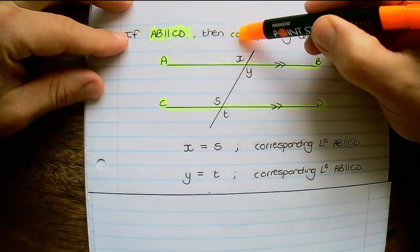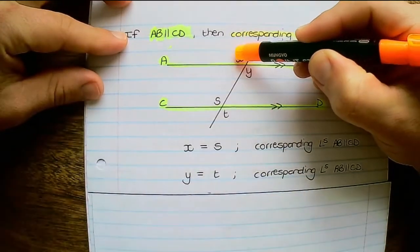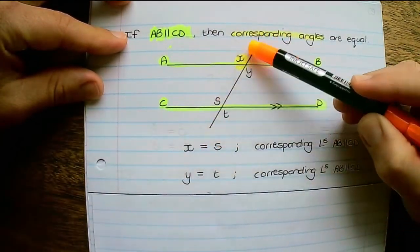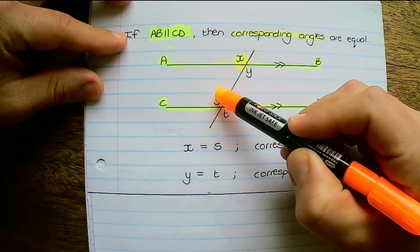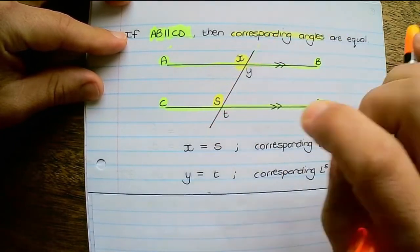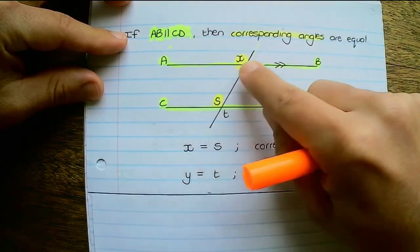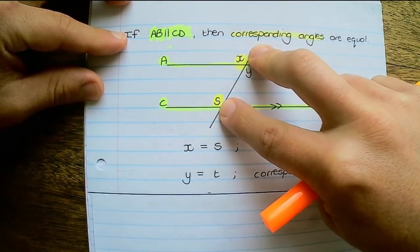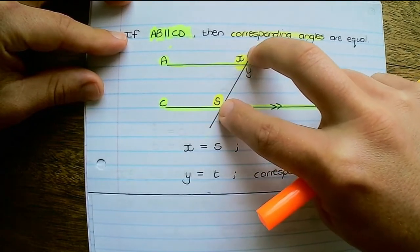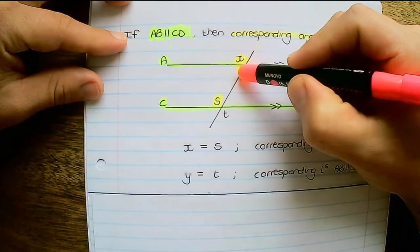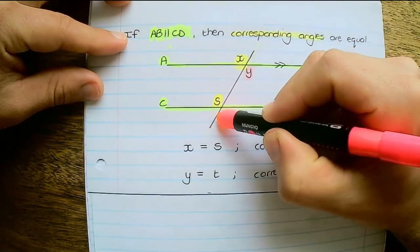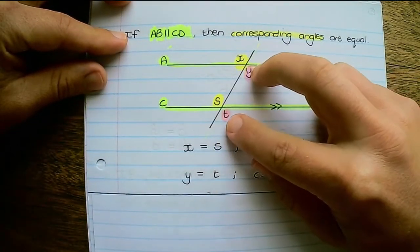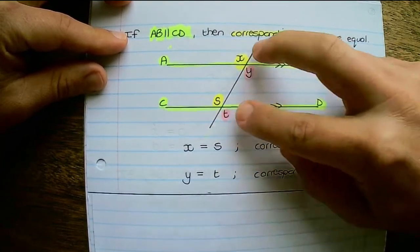Now let's speak about corresponding angles. Angle X is above line AB, and the transversal running through these two lines creates equal angles. X is above AB and S is above CD, so these two angles are equal — those are called corresponding angles. The same goes for Y and T: angle Y equals angle T because they are corresponding, as both are below the parallel lines.